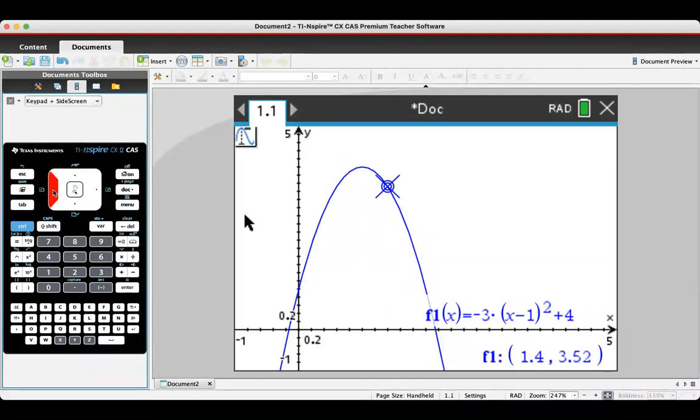It will snap, that means lock on, to critical points like a maximum 1 comma 4, and if I keep on going down here it'll snap to the y-intercept 0, 1, and snap to an x-intercept.